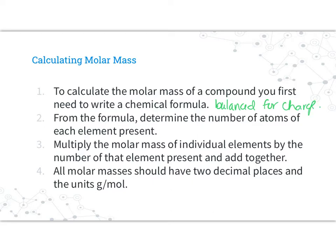From the formula, determine the number of atoms of each element present. Multiply the molar mass, or atomic mass, of individual elements by the number of that element present, and add these all together. All molar masses should have two decimal places and the units grams per mole.